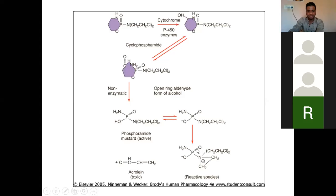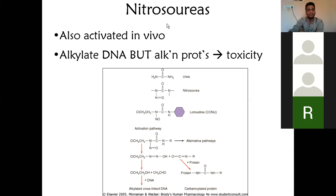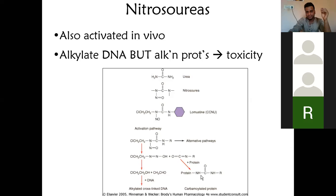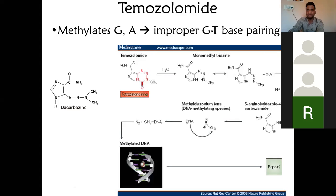Acrolein is responsible for this hemorrhagic cystitis. The next class of drug is nitrosoureas — these get activated in vivo and also function as alkylating agents. They alkylate the DNA, but because of this alkylation, many toxicities are produced. If they alkylate proteins, for example, significant toxicity occurs. The next drug is temozolomide — again an alkylating agent — which specifically methylates guanine and adenine.